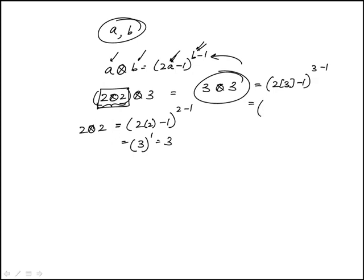So this is 2 times 3 is 6, 6 minus 1 is 5, and that's to the 2. 5 squared is 25, is the answer.